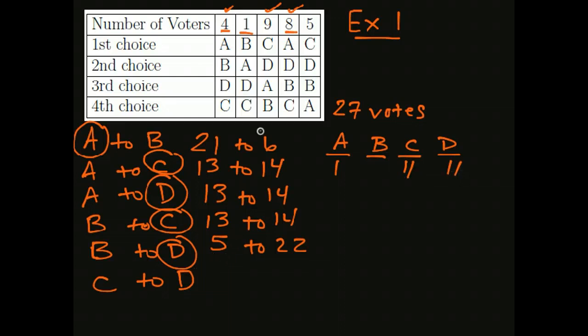And lastly, C to D. C wins over D, and these nine, and the last five, so a total of 14 to 13. So C wins that head-to-head battle. Okay, so we do have a winner. We have A with one point, C with three points, and D with two points. So C is our winner using the method of pairwise comparisons.